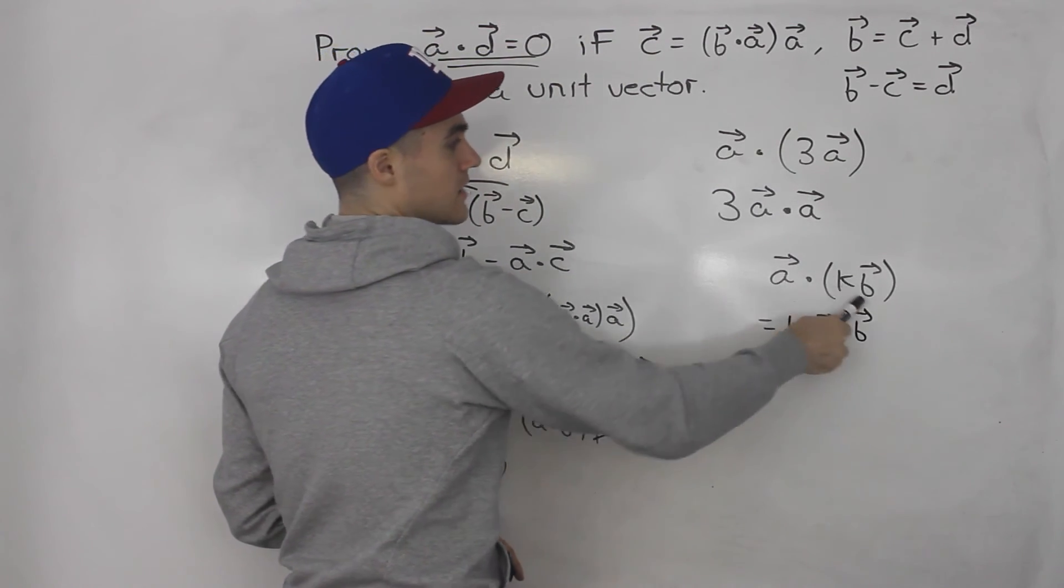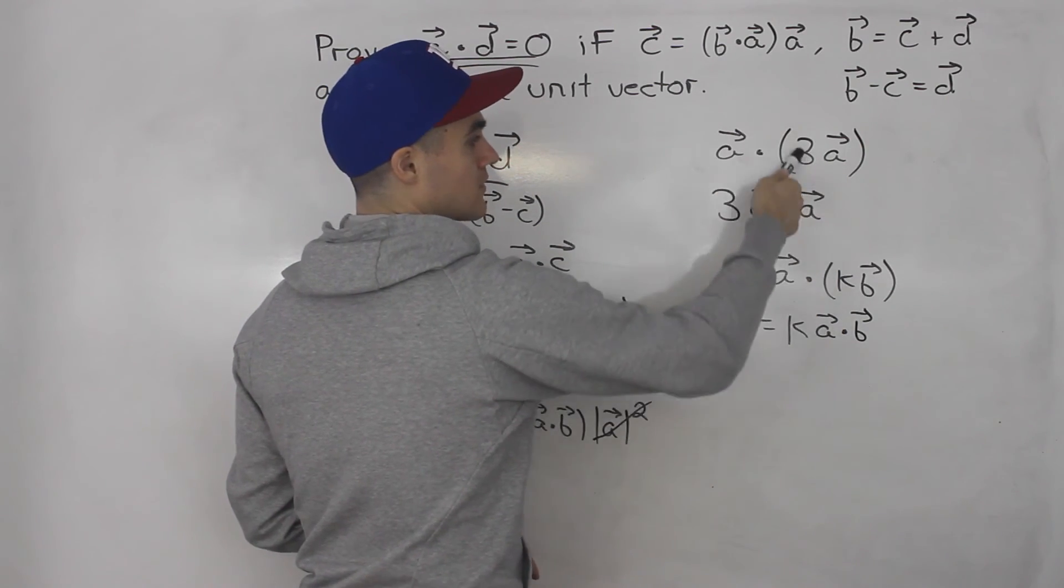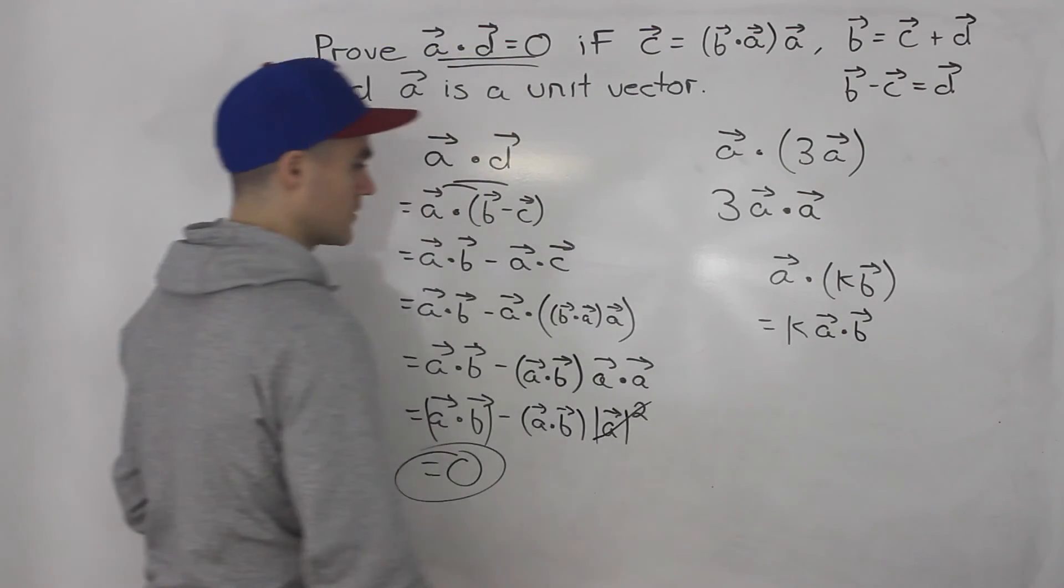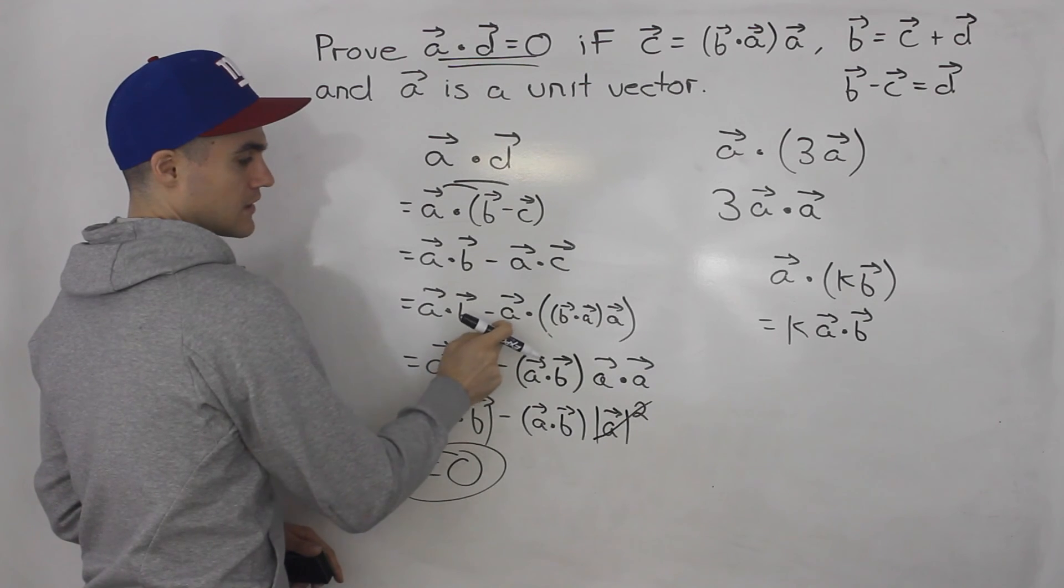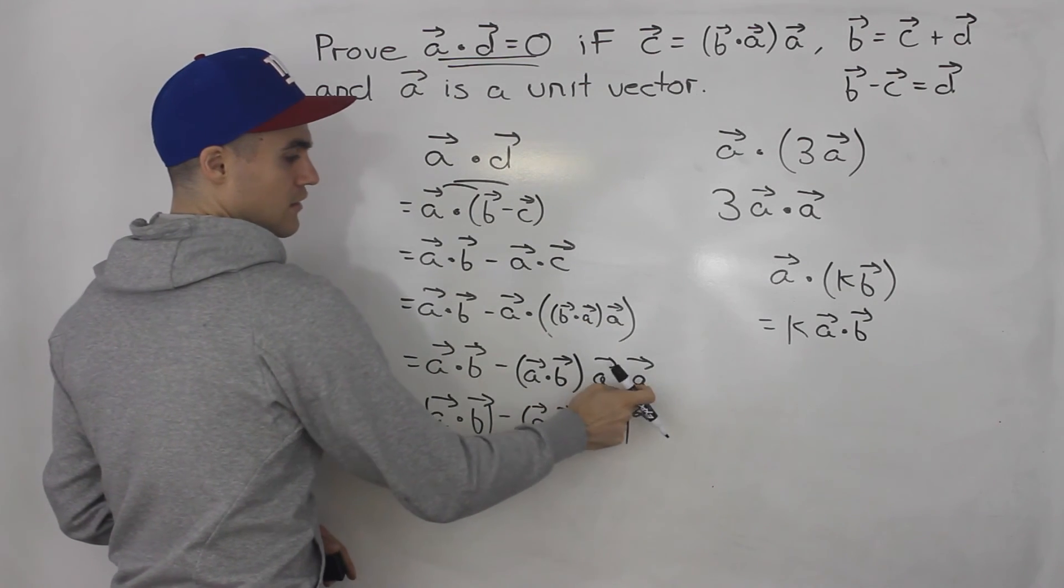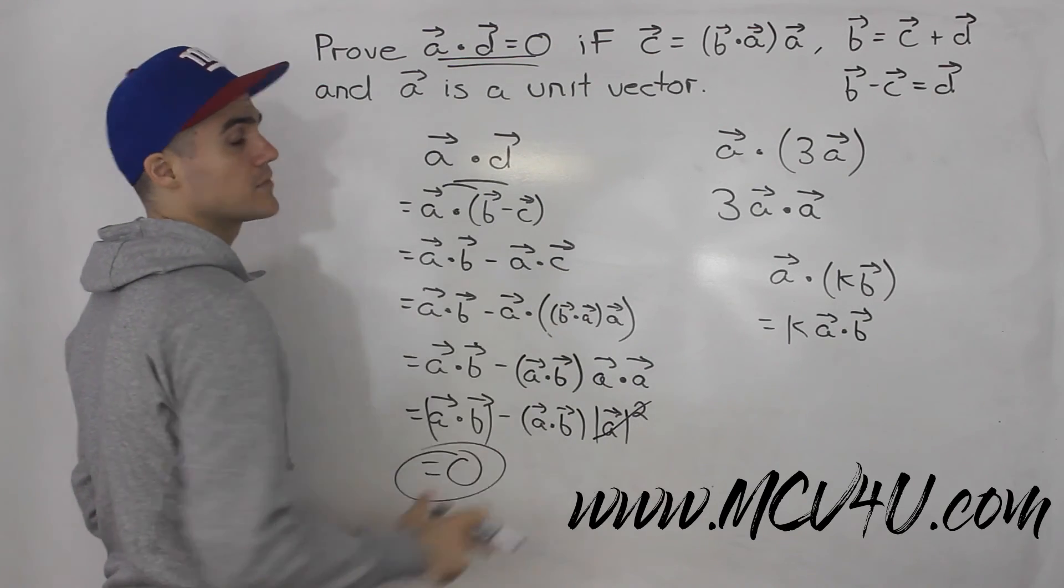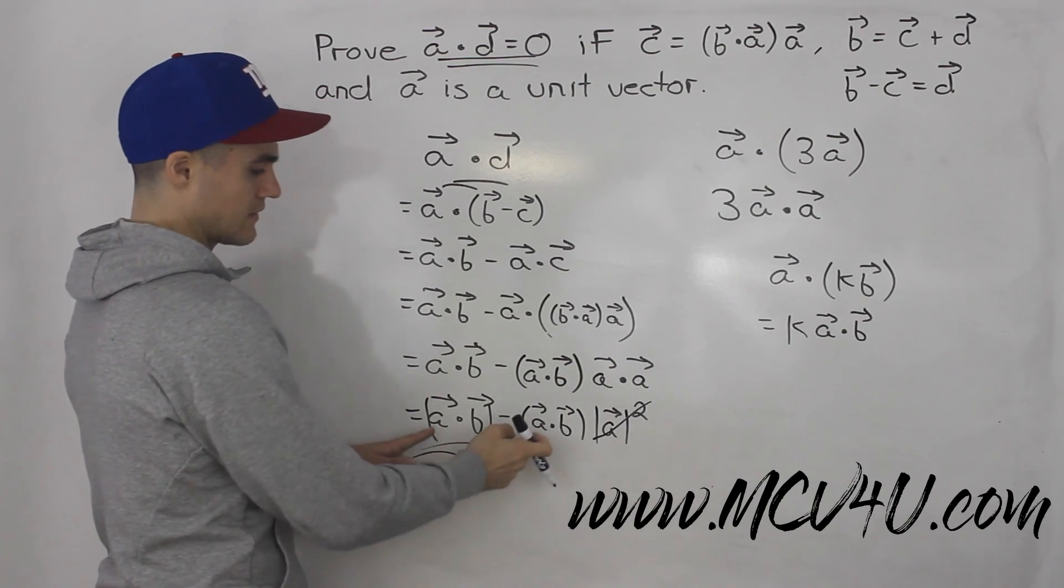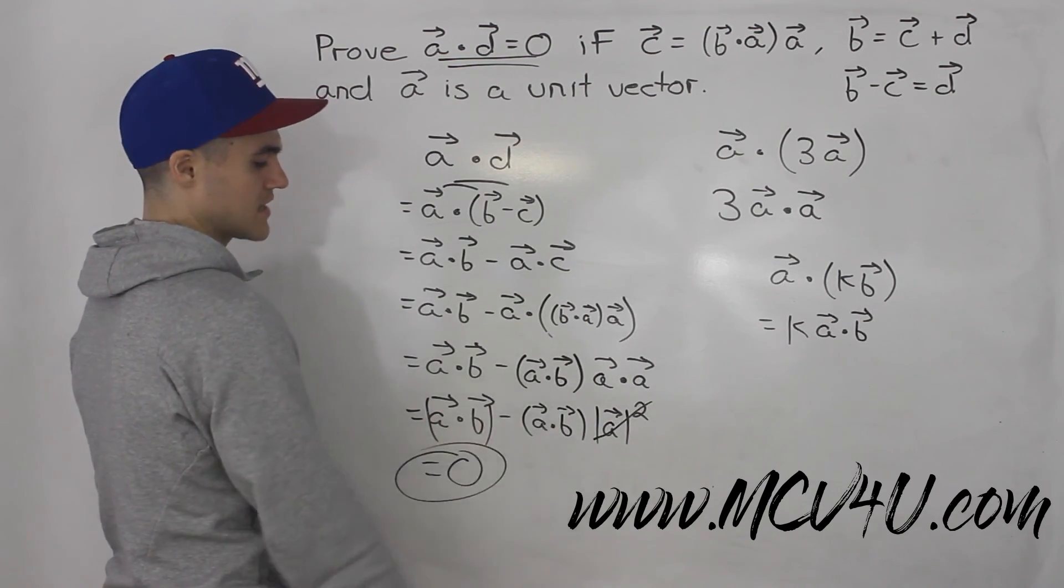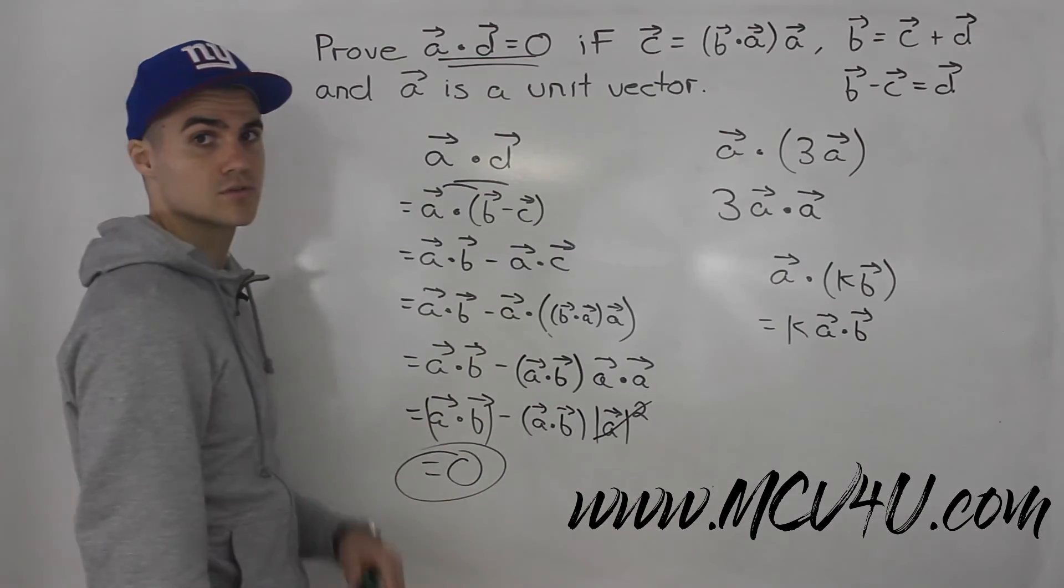But in this case, the a and b, they were the same vector, and we just brought that three in front. So that was pretty tricky. And then a dot a, that is just the magnitude of a squared. And then that's just going to be one because a is a unit vector. And then we're just left with a dot b minus a dot b, which is equal to zero.